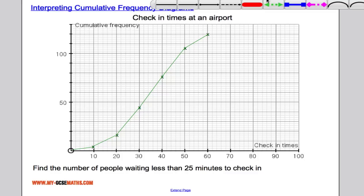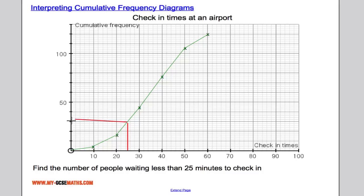So what I'm going to do is get my line tool and come to 25 minutes which is right here and draw a line up to the diagram and then across. And the figure I see here is 30 people. So up and across I can see that there's 30 people are waiting less than 25 minutes.